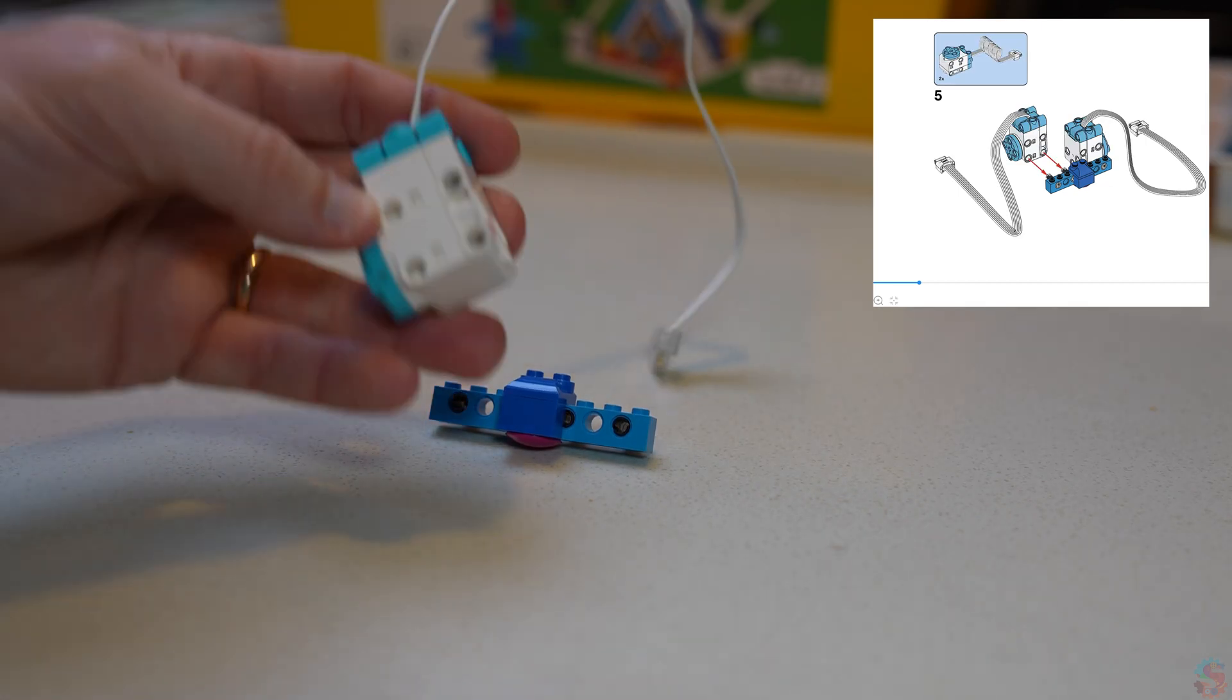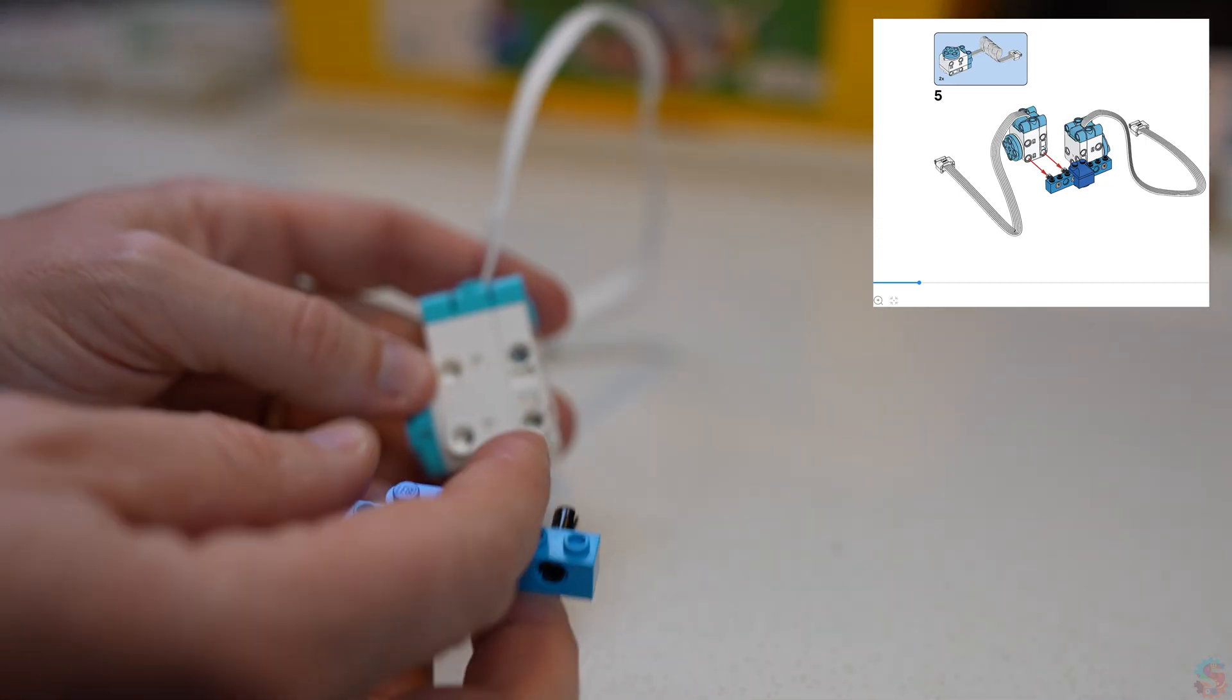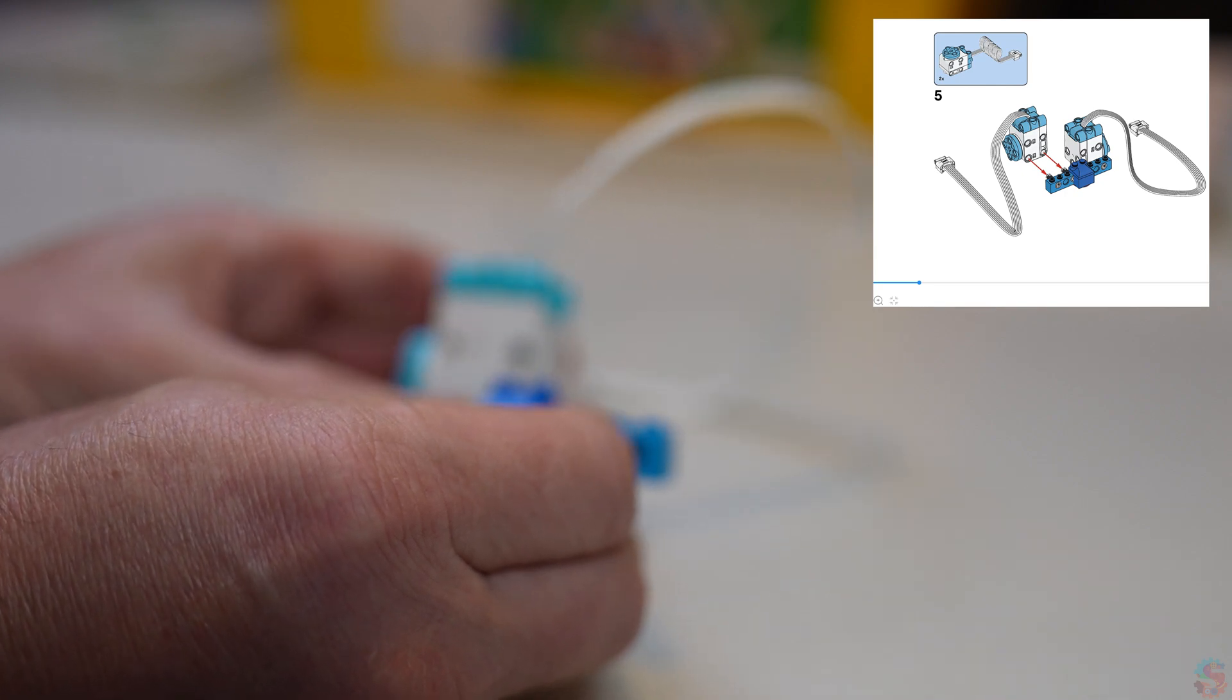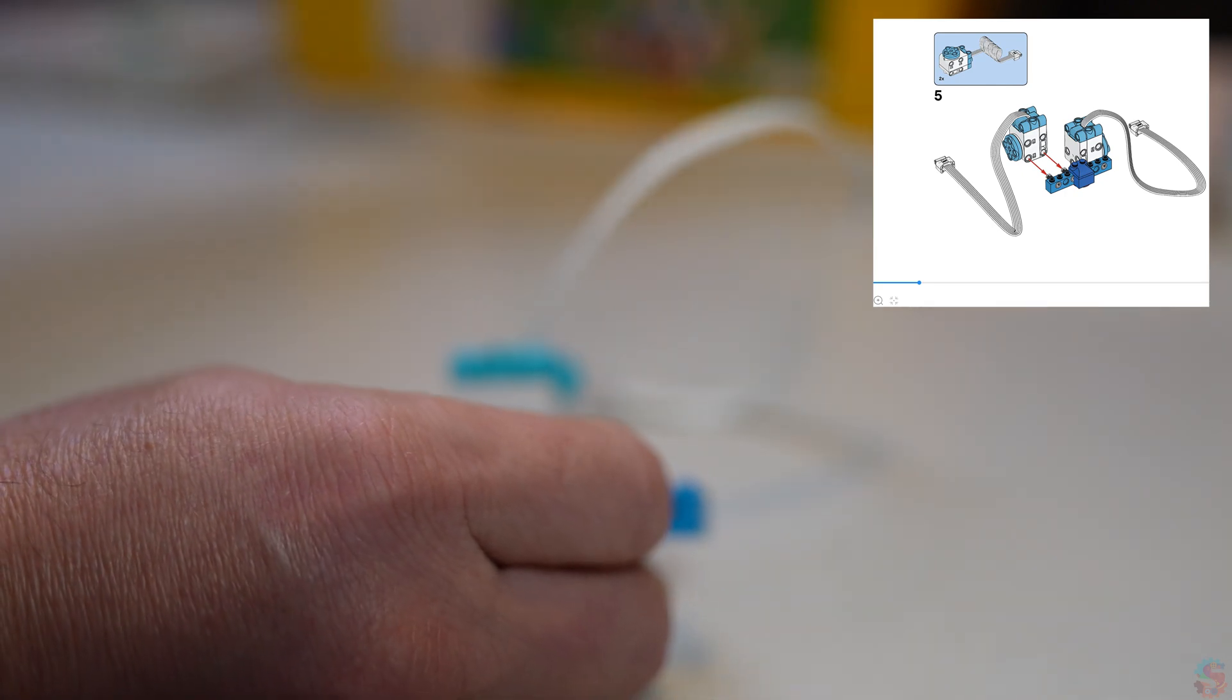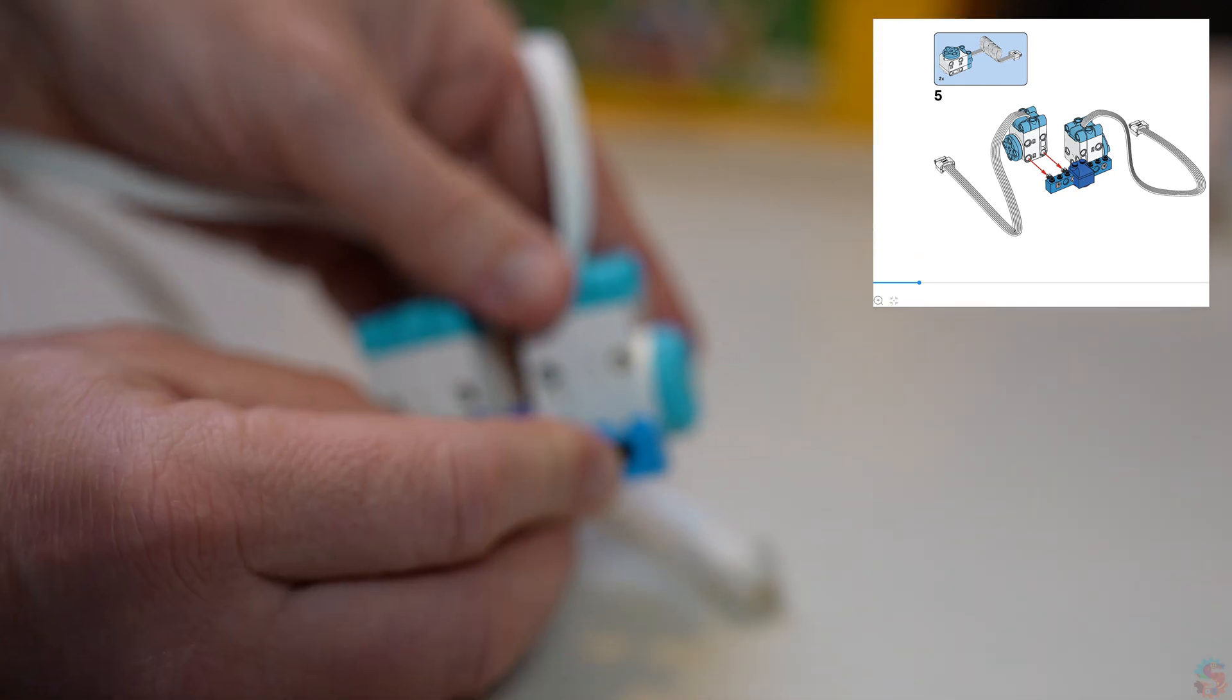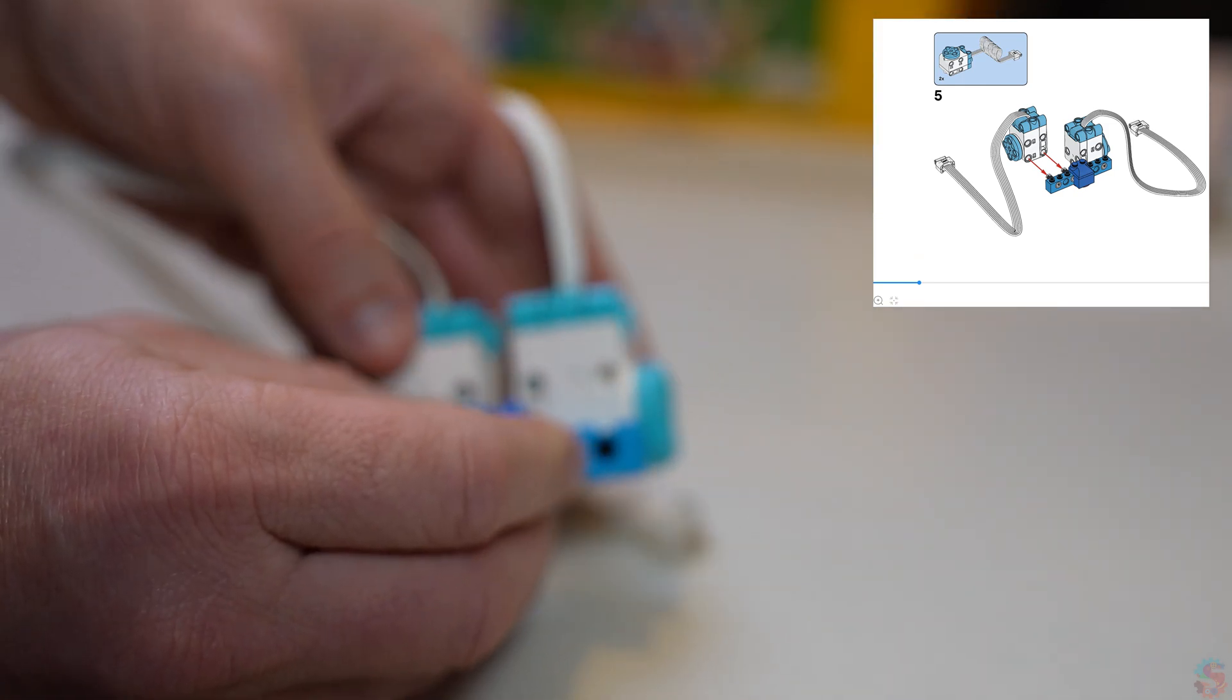Now here's where we attach our two motors. You want to make sure that blue wheel that's going to turn are facing away from each other, and you're going to plug them into those bottom two holes on both sides.